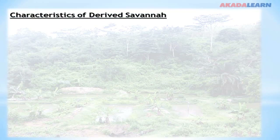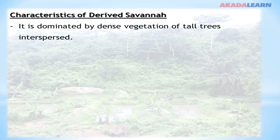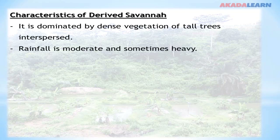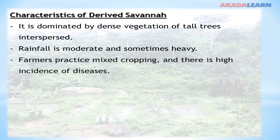Characteristics of the derived savannah: it is dominated by dense vegetation of tall trees interspersed with grassland. Rainfall is moderate, sometimes may be heavy. Farmers practice mixed cropping and there is high incidence of diseases in the derived savannah.